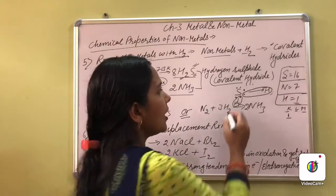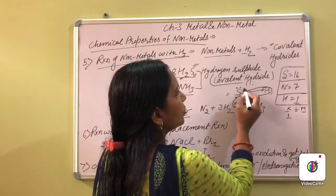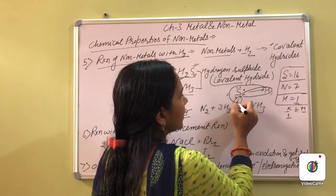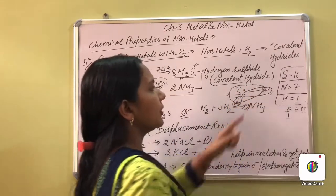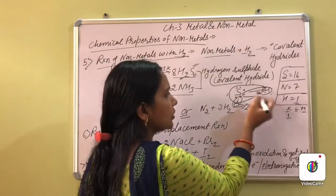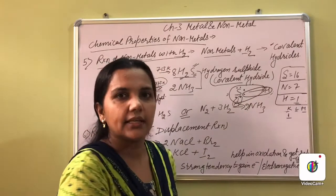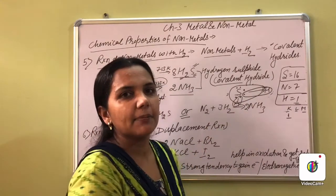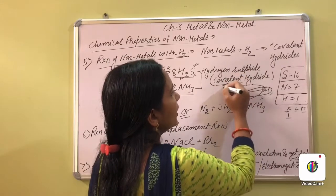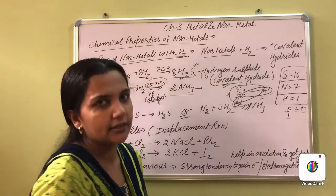Is it clear? Now for sulfur: sulfur needs 8 electrons total, 6 it has itself, and 2 it will share with hydrogen. So this is the bond formation — hydrogen is taking from sulfur and sulfur is taking from hydrogen, sharing with each other. That type of sharing is called a covalent hydride. These are said to be the covalent hydrides.